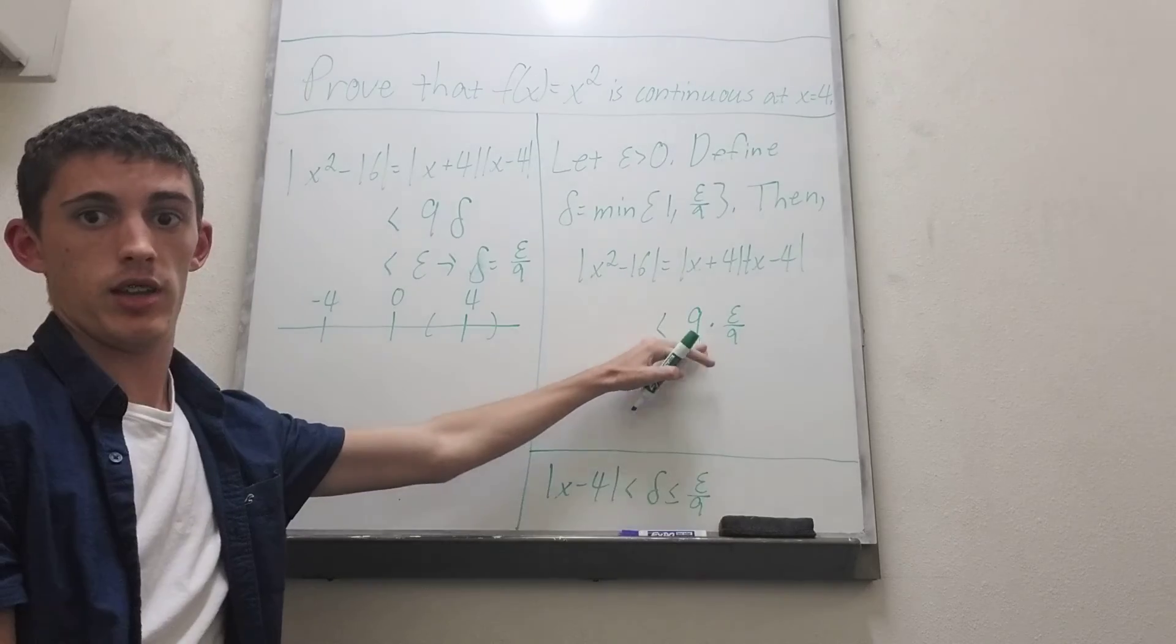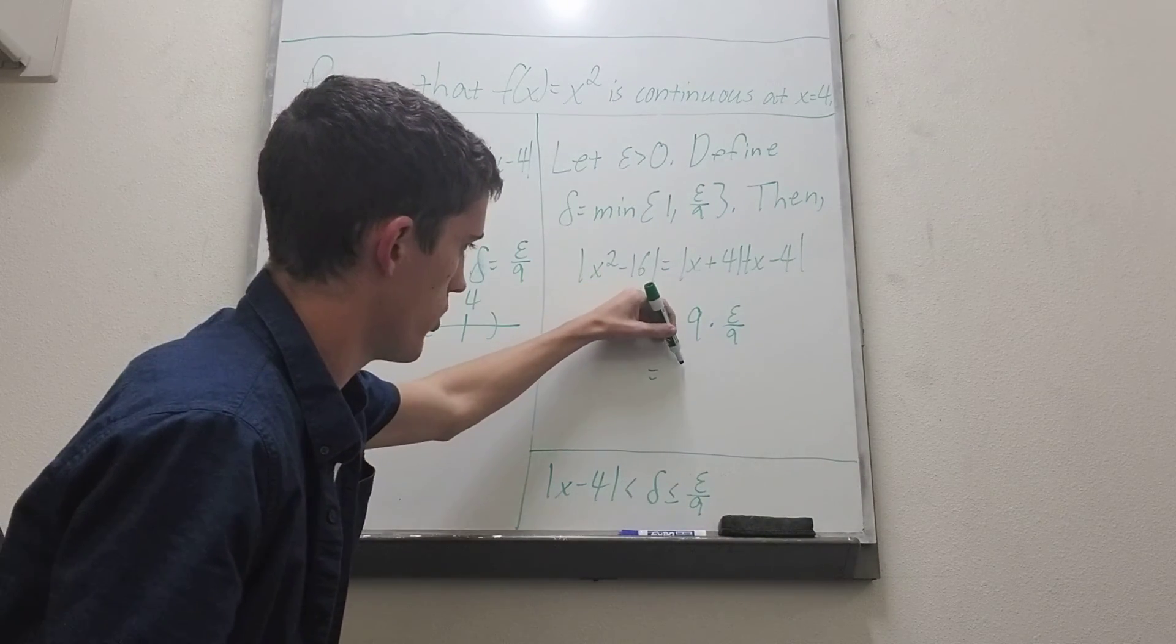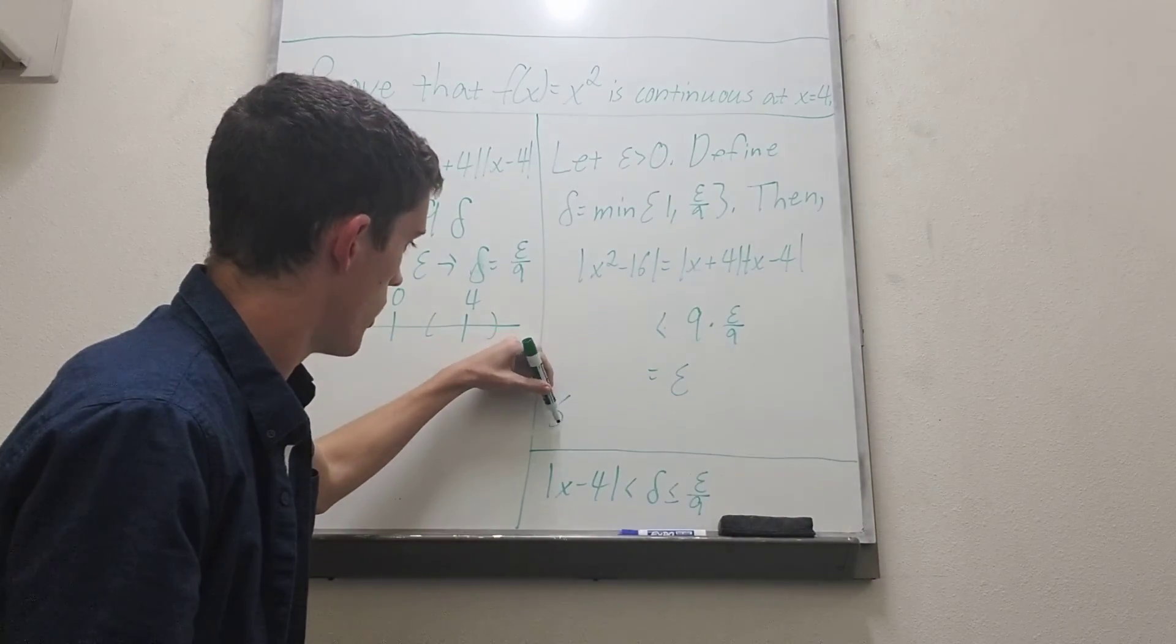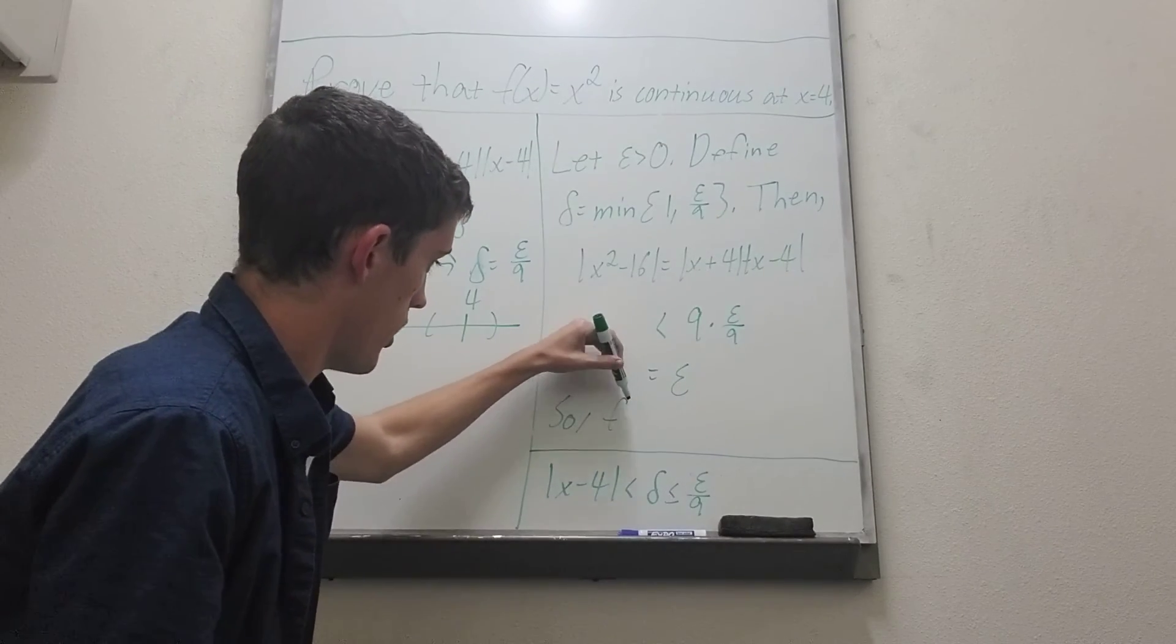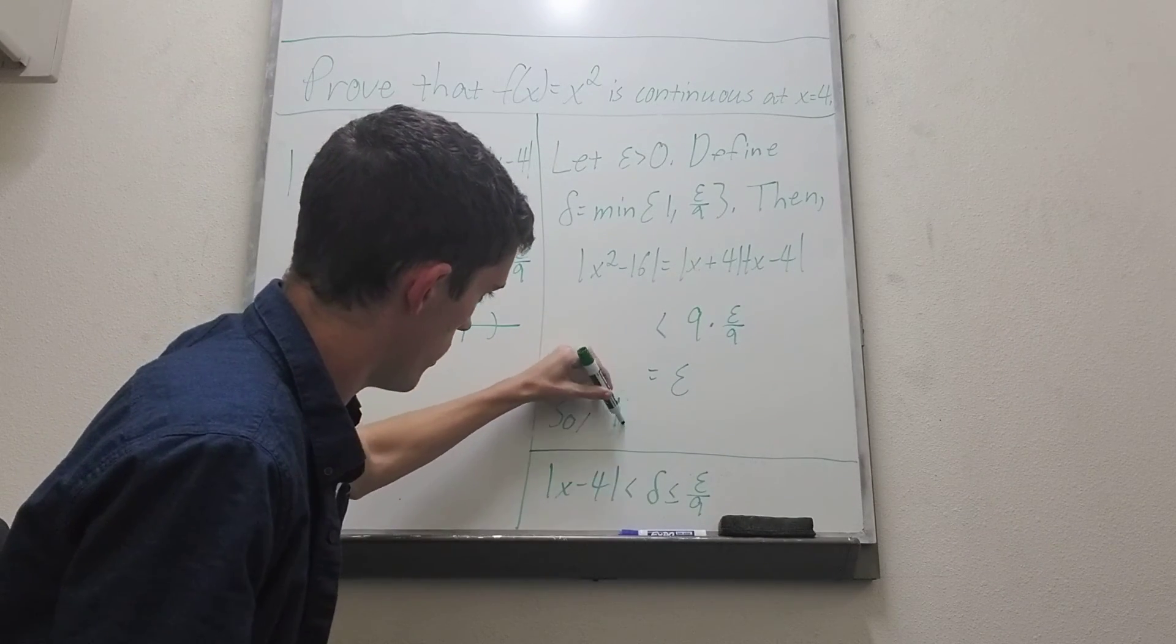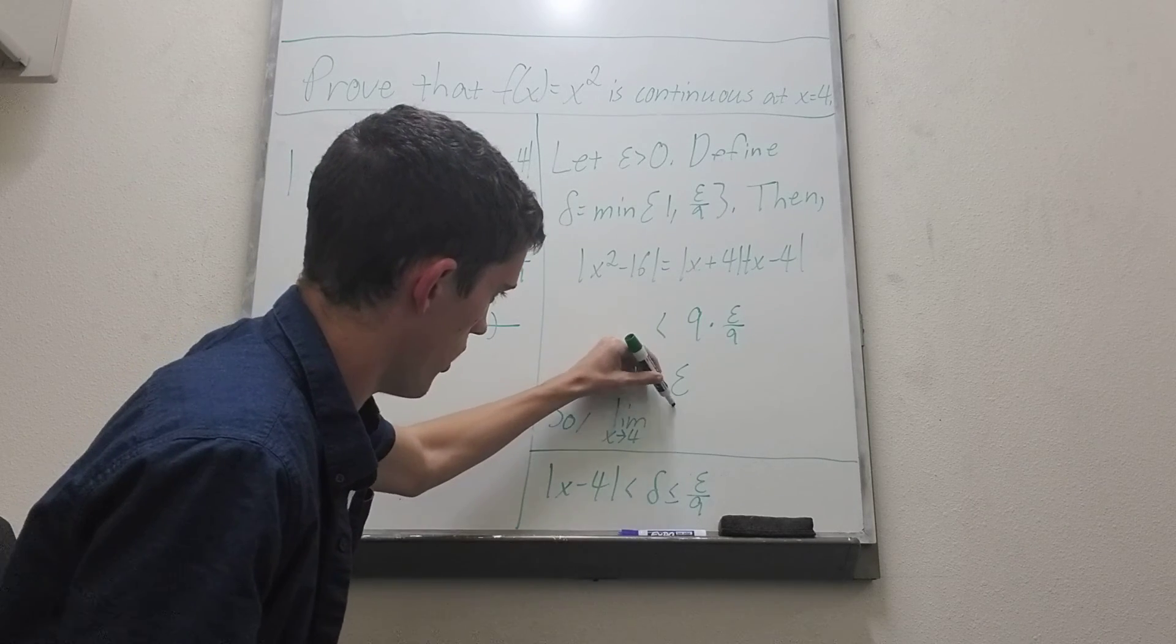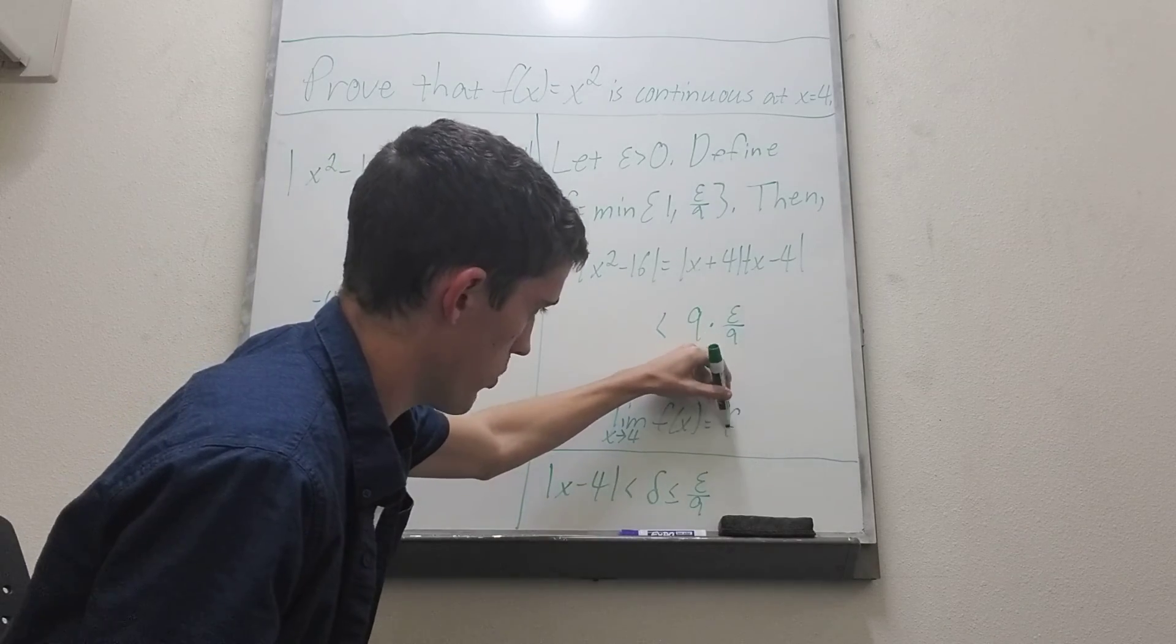So that's what I'm getting at here. And when we simplify this we get epsilon. So we see that the limit as x tends to 4 of f of x equals 16 which is f of 4.